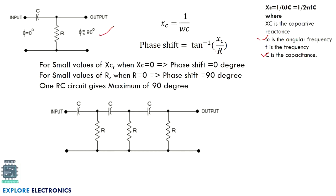The phase shift depends on the values of R and C. If Xc is very small (approaching 0), the phase shift approaches 0°. If R approaches 0, the denominator approaches 0 and the phase shift approaches 90°. So a single RC network can provide a maximum phase shift of 0° to 90°. Using two such RC combinations, we could expect up to 180°, but practically it is difficult to achieve exactly 180° with only two pairs.